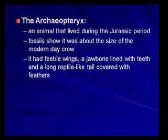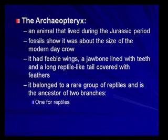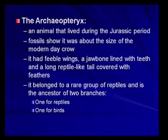This thing didn't know whether it was a bird or a reptile - it had a tail with feathers, feeble wings, and a jaw lined with teeth. Birds don't have teeth - they've got beaks. It belonged to a very rare group of reptiles and is the ancestor of two branches: one for reptiles and one for birds. The tail and jawbone indicate reptile, while the feathers indicate it's coming from the birds.